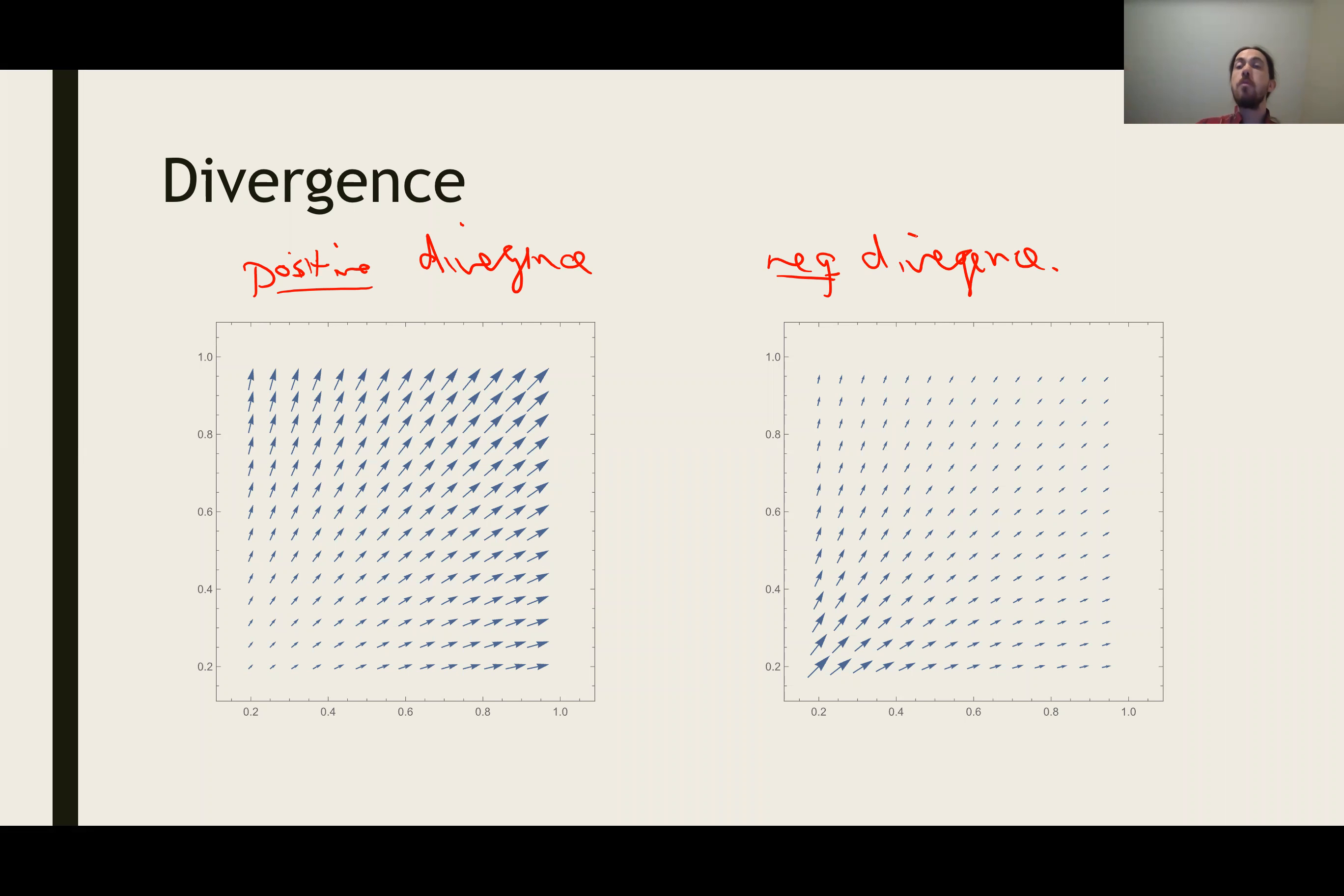Even though both kind of look like they're expanding away from the lower left hand corner. The point is that divergence is local. It's measuring expansion or contraction.